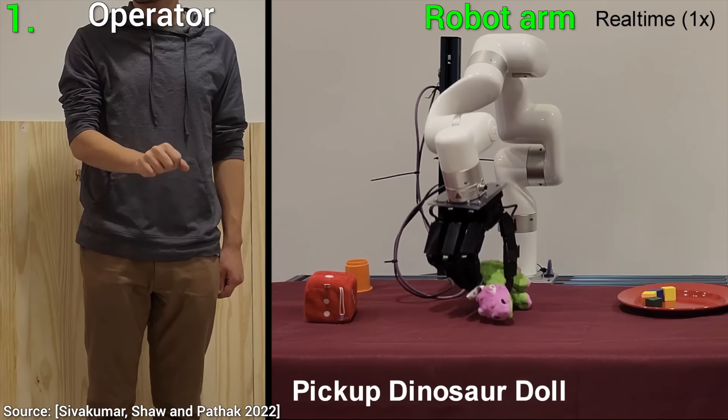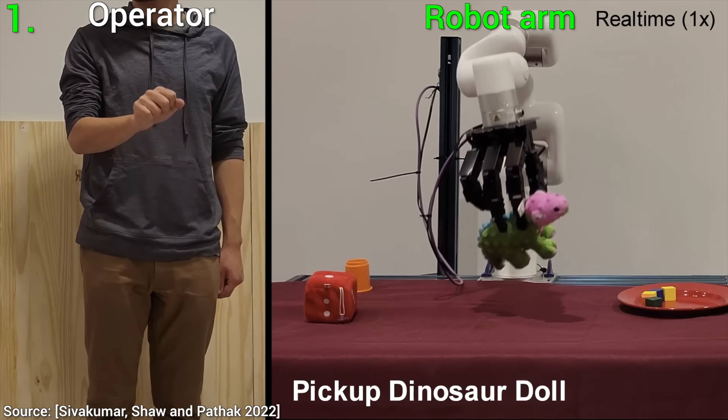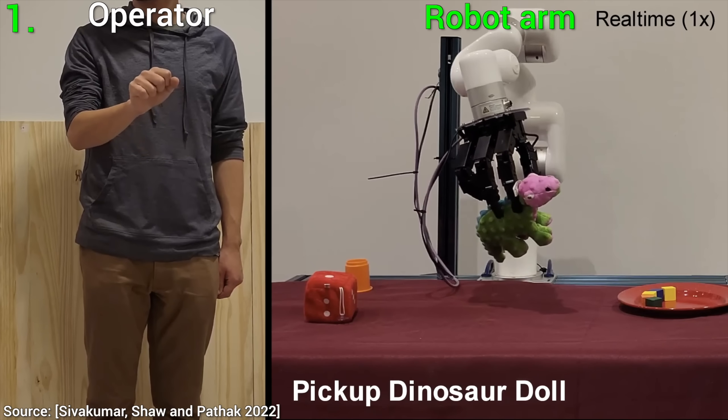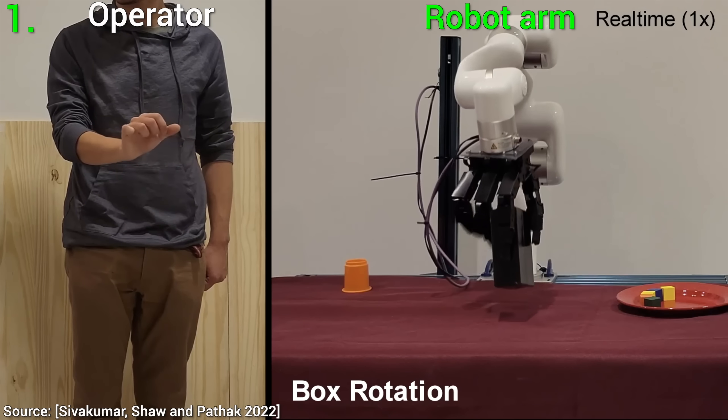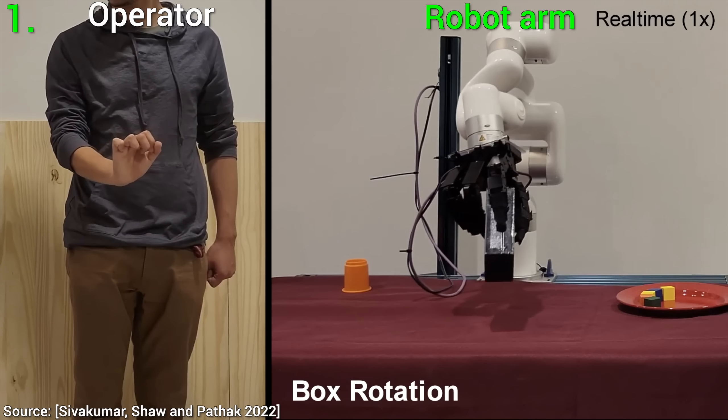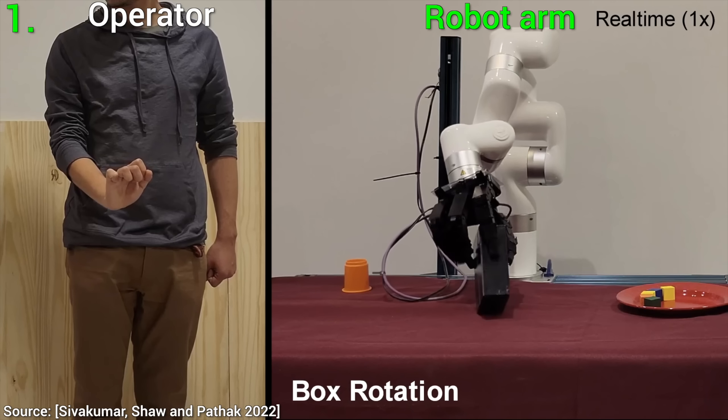It is not a brute, not at all. With delicate movements, it can pick up these plush toys, or even rotate a box. That is a fantastic start. But it can do even better.